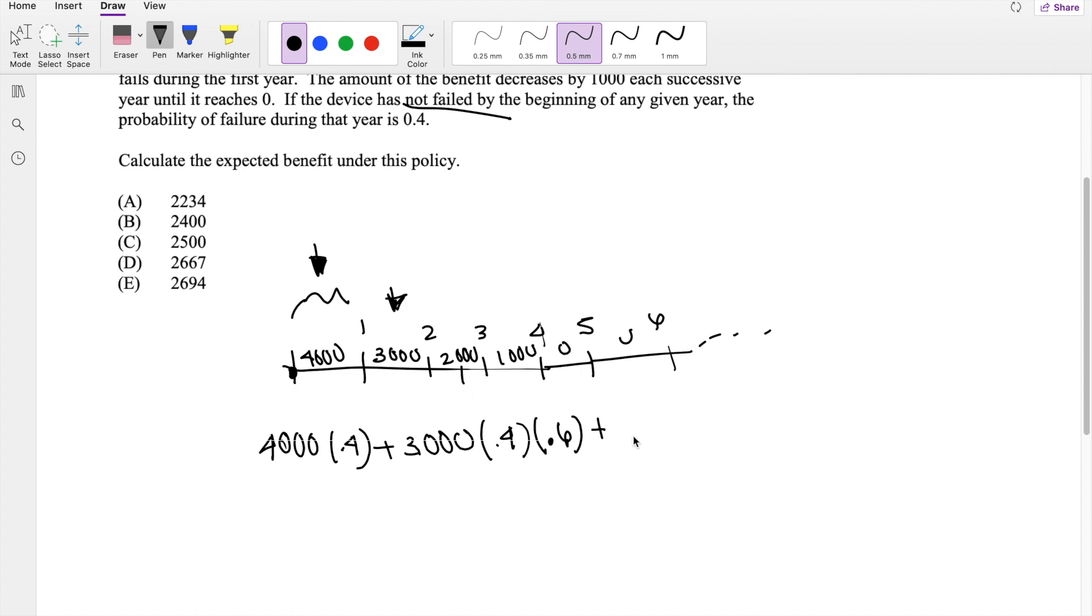And then right here for $2,000, it's going to be $2,000. Same idea, it's going to be the probability that it fails times $2,000 times 0.6. It couldn't have failed in here. It couldn't have failed here. And it also couldn't have failed here. So it's going to be 0.6 to the second.